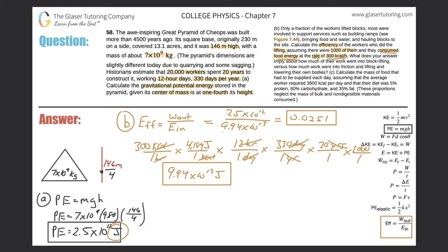Now let's look at letter C: calculate the mass of food that had to be supplied each day, assuming the average worker required 3,600 kilocalories per day, and that their diet was 5% protein, 60% carbohydrate, and 35% fat. First, we need the energy values: protein gives about 4 kilocalories per gram, carbohydrates about 4 kilocalories per gram, and fat about 9 kilocalories per gram.